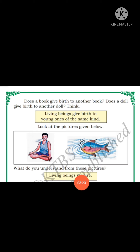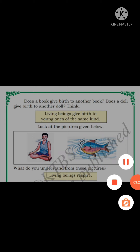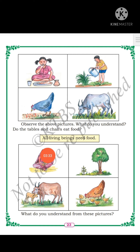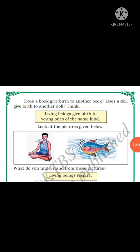So from this we studied the characteristics of living beings and non-living things. Living beings grow, all living beings need food, living beings give birth to young ones of the same kind, and living beings respire. Whereas non-living things do not grow, do not need food, do not give birth to their young ones, and do not need air to respire. These are all the characteristics of living beings and non-living things.